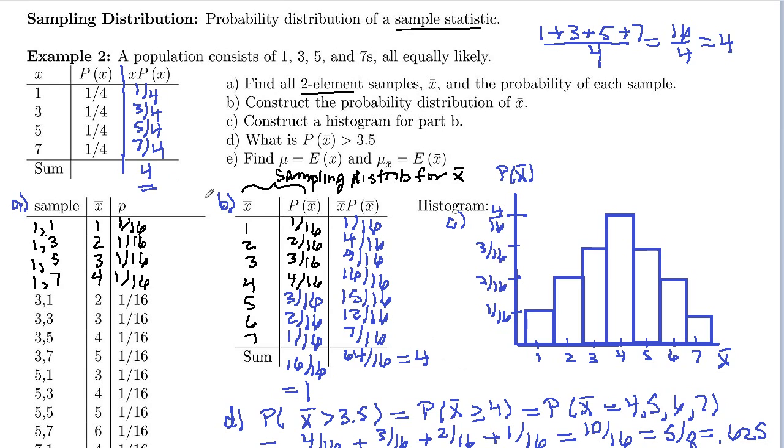So notice the mean of the original distribution was 4, and the mean of the X bar distribution, the sampling distribution, is 4. And then also notice that the center of this symmetric distribution here is at 4, and that is actually our mean of the X bar distribution, 4.